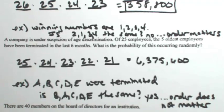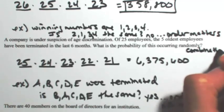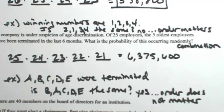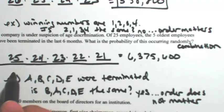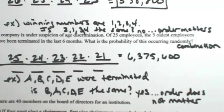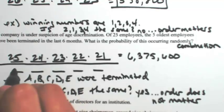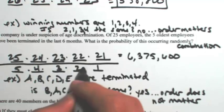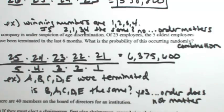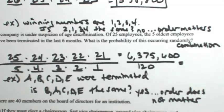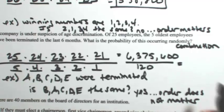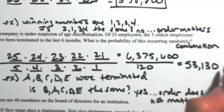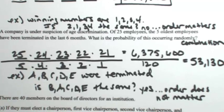So order does not matter, which makes this a combination. If you switch two things, you're going to get the same thing. So that means that we need to divide the repeats. So I have five people, so I need to divide out these five. So there's five ways to arrange that first person, then four, then three, then two, then one. So we're going to divide this by essentially five factorial, which is 120.